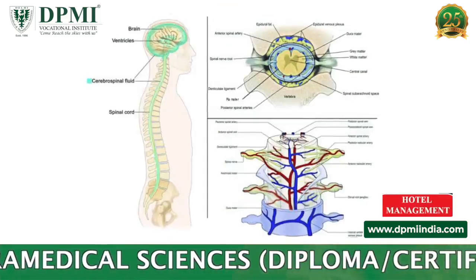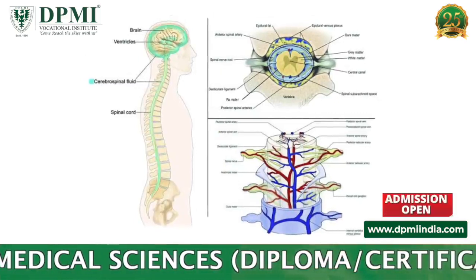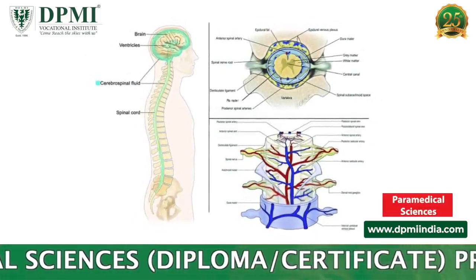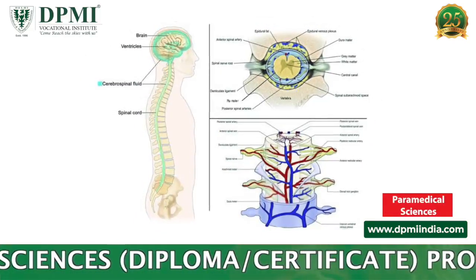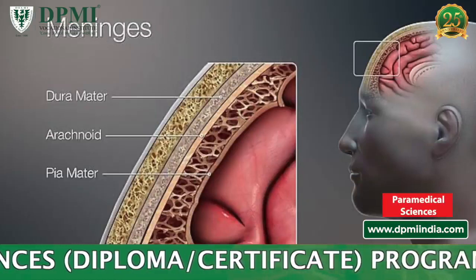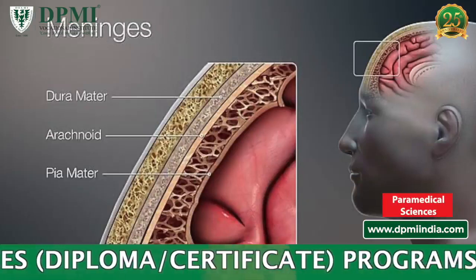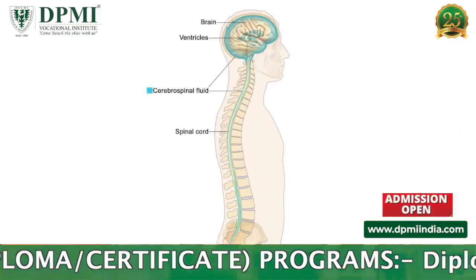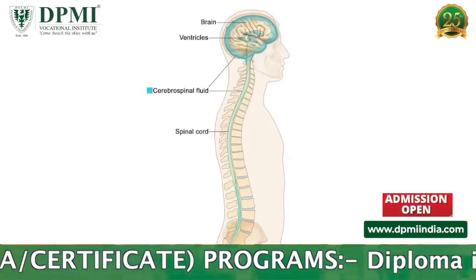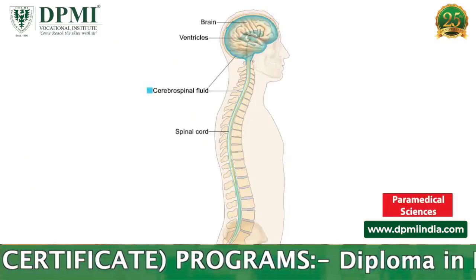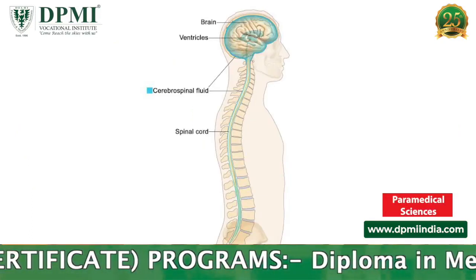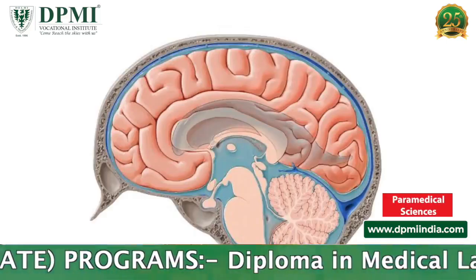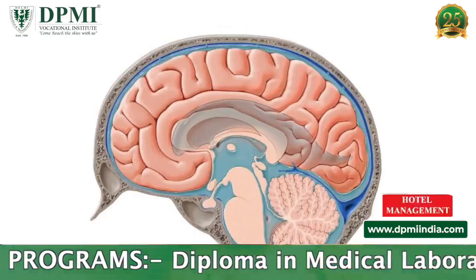The brain is protected by the bones of the skull, and the spinal cord is protected by the vertebrae of the spine. A three-layer membrane called the meninges further protects the brain and the spinal cord. A thin layer of cerebrospinal fluid is maintained between two meningeal layers, providing nutrition and cushioning to the brain and the spinal cord.